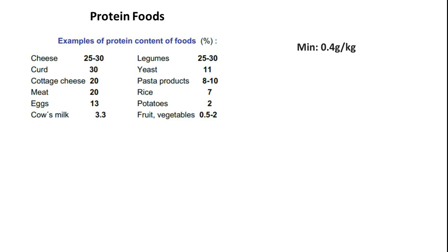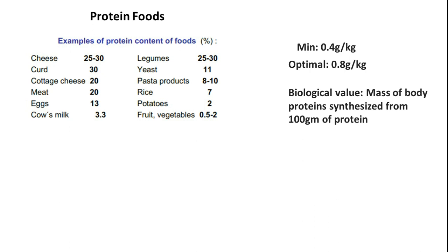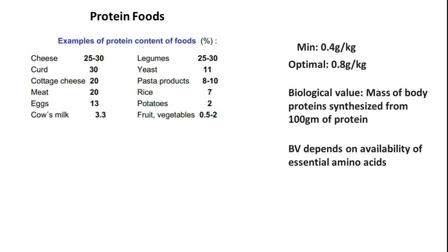Every person needs to consume at least 0.4 grams per kg of protein, and optimally 0.8 grams per kg of body weight. For example, a 100 kg person should consume 80 grams of protein every day. The biological value of a protein-rich food is the mass of body protein synthesized from 100 grams of consumed protein — that is, how much is actually absorbed and integrated into the body.